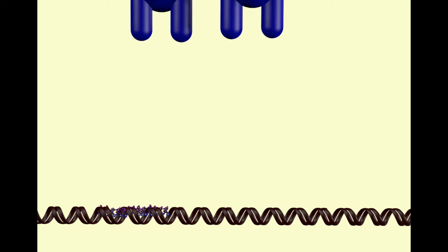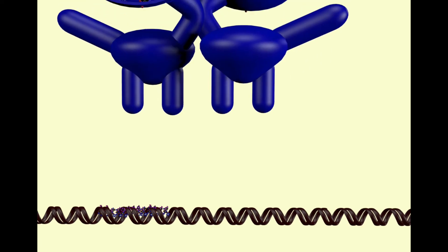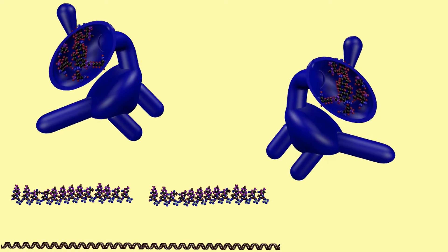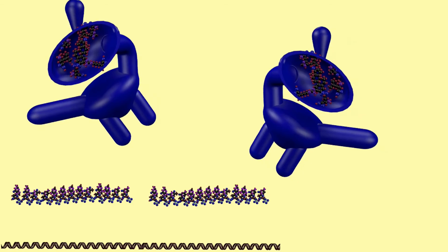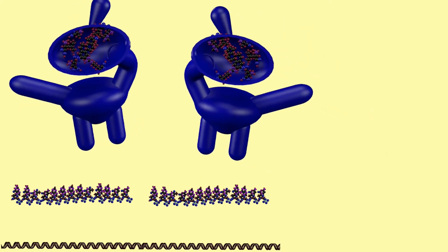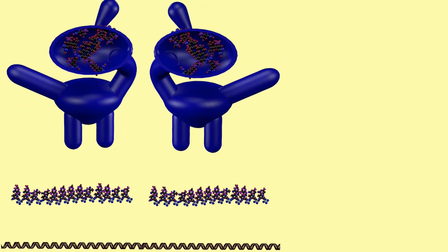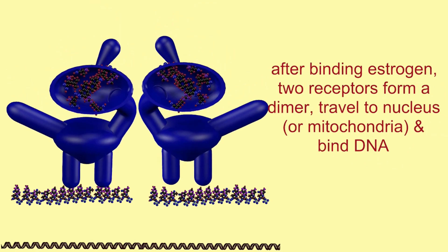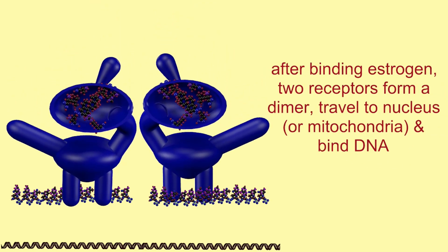These sequences can then form a palindrome loop by binding together. This, then, is the estrogen response element to which the estrogen receptor can bind. Genes which possess this sequence can have the estrogen receptor bind to them, although it must bind as a dimer — two estrogen receptors binding only to genes which possess these sequences, thus regulating those genes only.